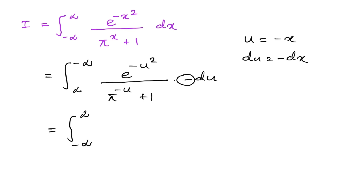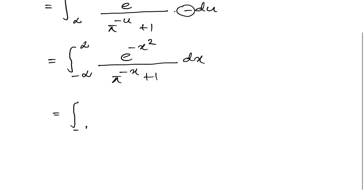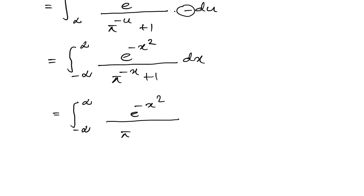We interchange the upper and lower limits — from minus infinity to infinity — and the minus sign gets cancelled. Since the definite integral is independent of the variable, we rename u back to x. For pi to the minus x, we write 1 over pi to the x, and take the common denominator: pi to the x plus 1 over pi to the x in the numerator.